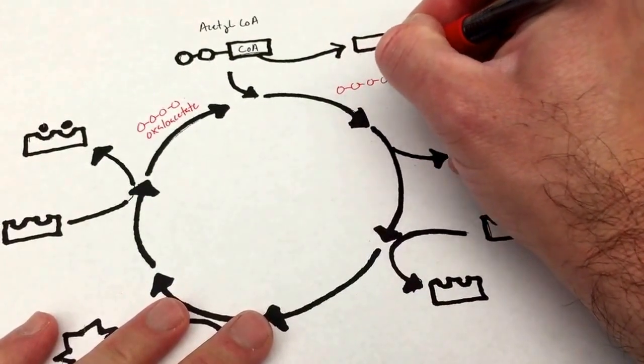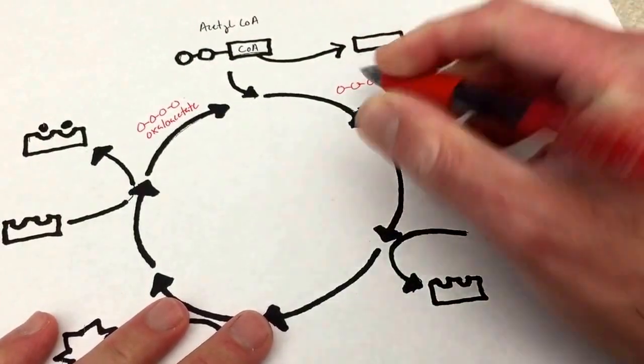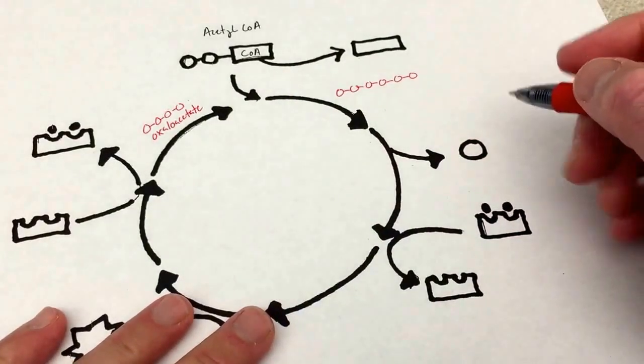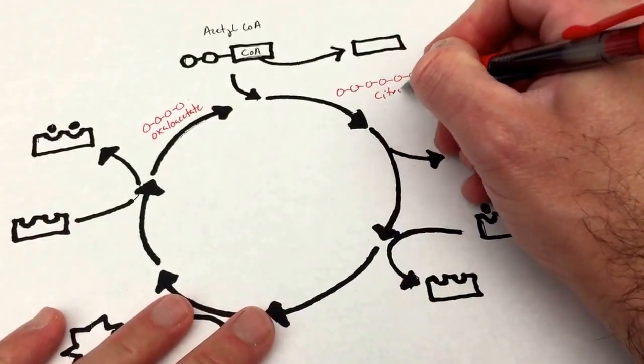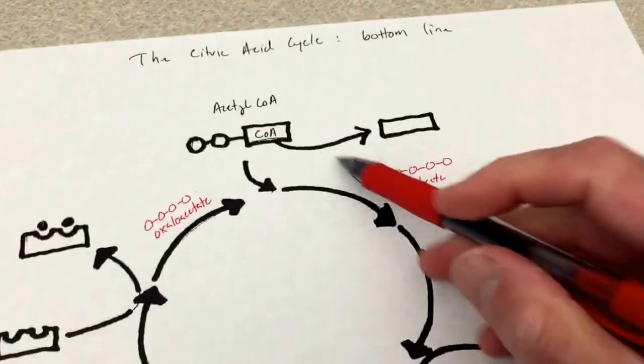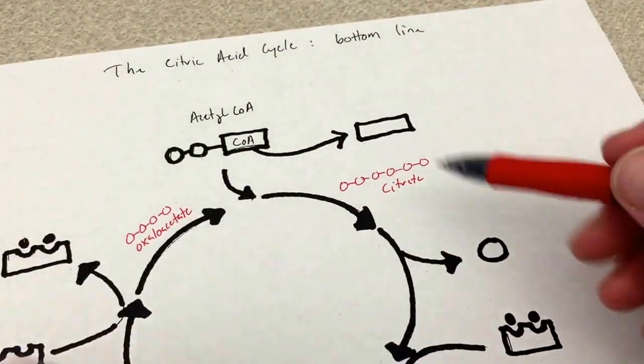One, two, three, four, five, six carbon molecule called citrate, aka citric acid.